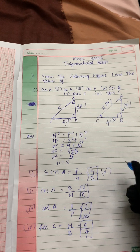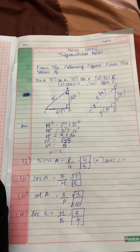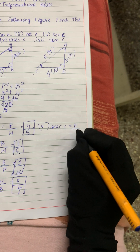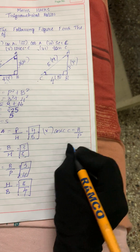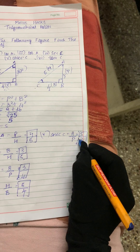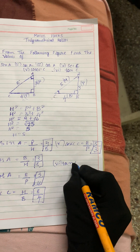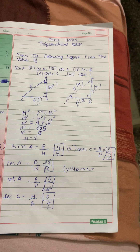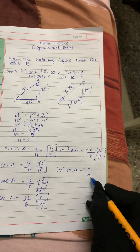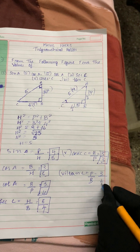The fifth one is cosec C. The formula for cosec C is H by P — hypotenuse by perpendicular. Hypotenuse is 5 and perpendicular is 3, so cosec C = 5 by 3. The sixth one is tan C. The formula for tan is P by B. Perpendicular is 3 and base is 4, so tan C = 3 by 4.